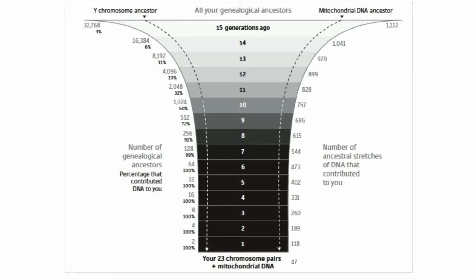So back to the topic. Going back one generation to your parents, you will have about 70 recombination stretches of DNA, plus the number of chromosomes and your mitochondrial DNA. Going back 10 generations, you will have more than 700 stretches of DNA from different ancestors. On the left side of the graph, we have the percentage of all your ancestors that contributed DNA to you — the number of ancestors doubles every generation.